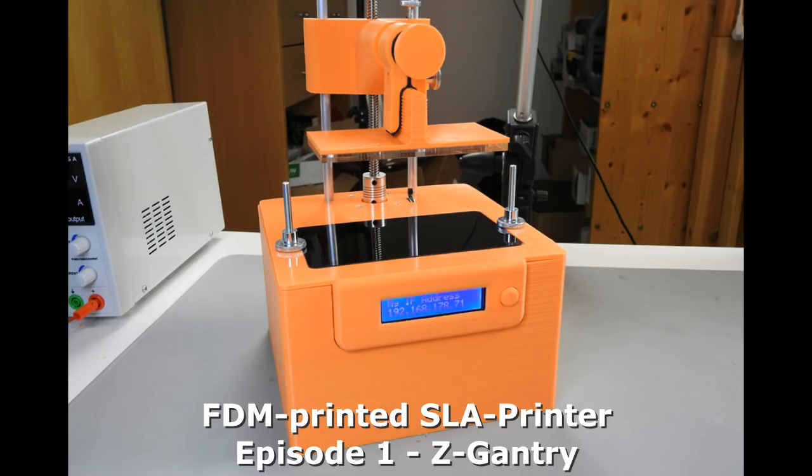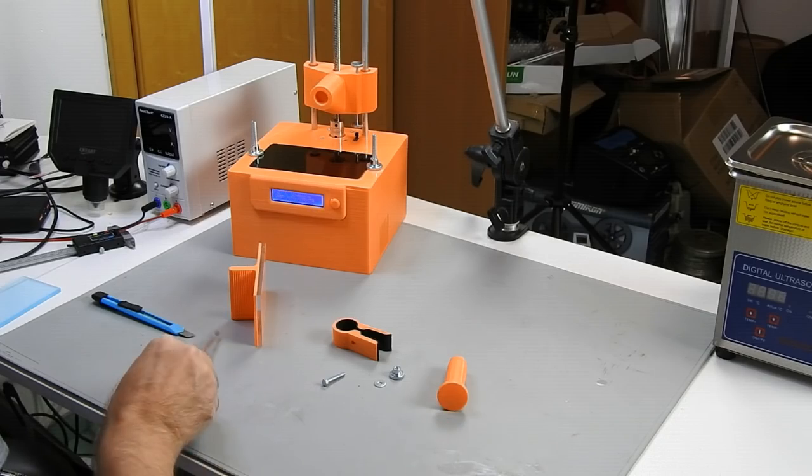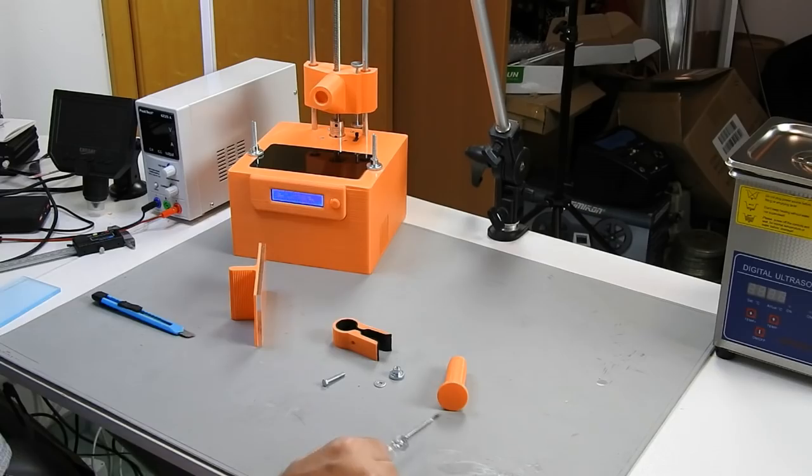Hello and welcome to our first episode about the FDM printed SLA printer. It's about the Z-Gantry. First, an overview about the parts we need. They mainly consist of three 3D printed parts.